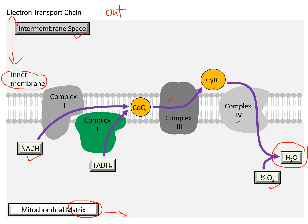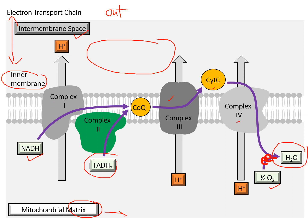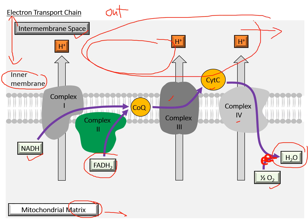Complex 2 receives electrons specifically from FADH2, and those electrons flow through a similar pathway except they bypass complex 1. One important note: all protein complexes except complex 2 can pump protons across the inner membrane into the inter-membrane space. The flow of electrons provides the energy for these protein complexes to pump protons, building up a high proton gradient that can then be used by ATP synthase to make ATP.